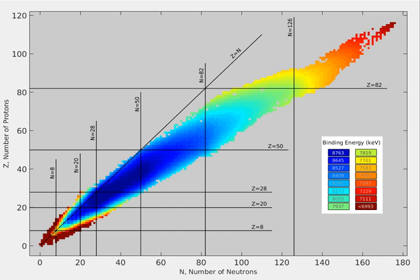The boundaries of the valley correspond to the nuclear drip lines, where nuclides become so unstable they emit single protons or single neutrons. Regions of instability within the valley at high atomic number also include radioactive decay by alpha radiation or spontaneous fission.